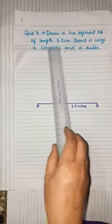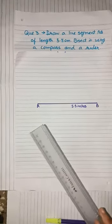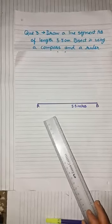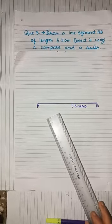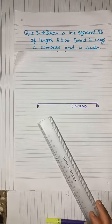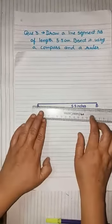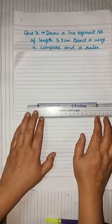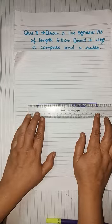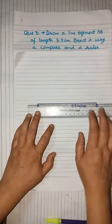Bisect it using a compass and a ruler. Now students, if I take distance equal to 5.5 cm then the construction which I am going to do here on this page is not visible. Therefore, for convenience and clarity of the video, I am going to take the distance which is equal to 5.5 inches. Therefore students, I have used a ruler here and I have drawn line segment AB whose length is 5.5 inches.